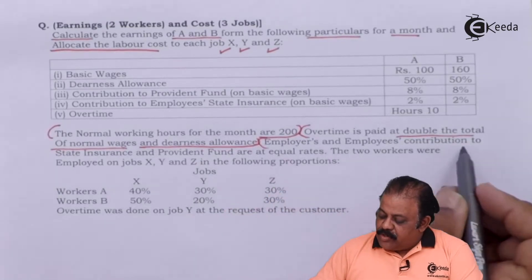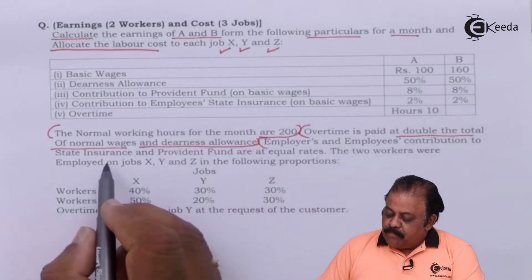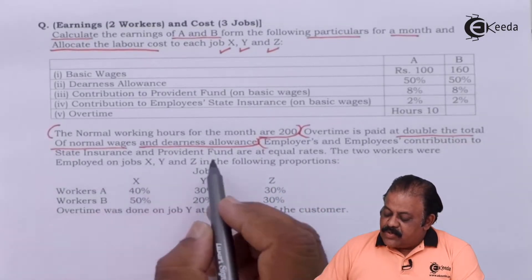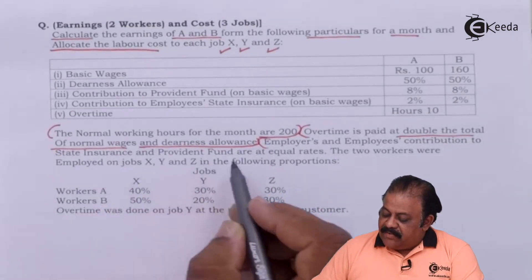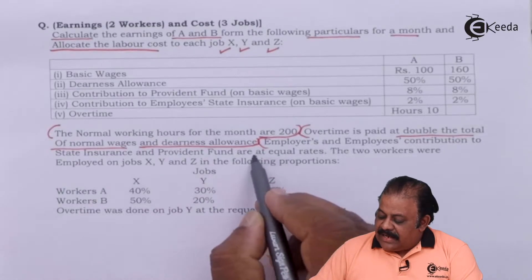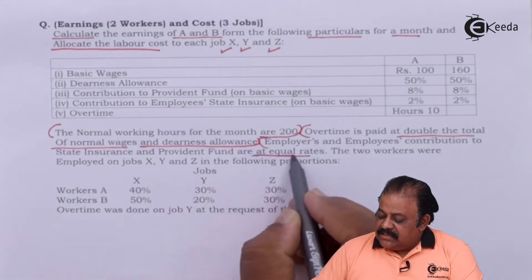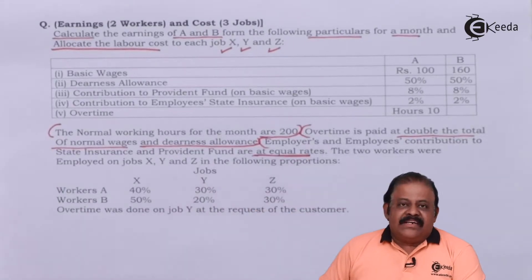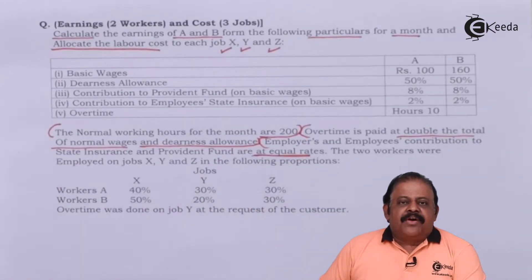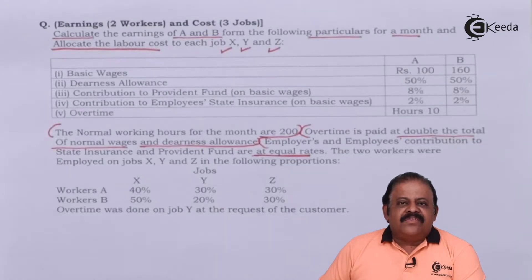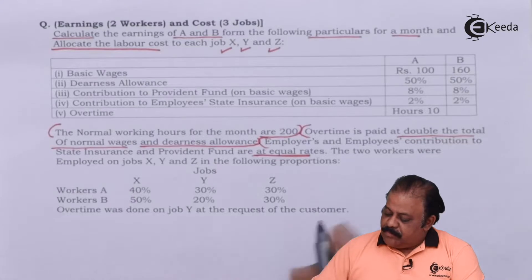Employers' and employees' contributions to Employee State Insurance and Provident Fund are at equal rates, meaning the amount contributed by the employee as well as the employer are both of the same value.